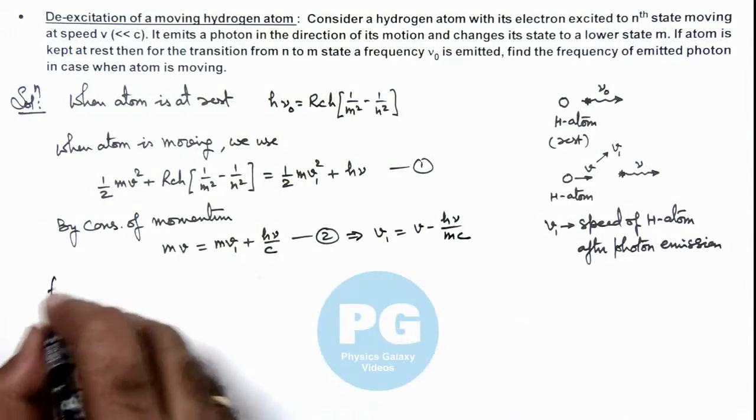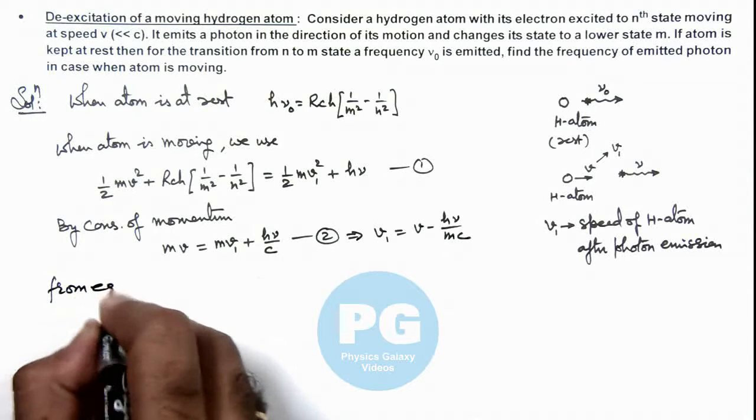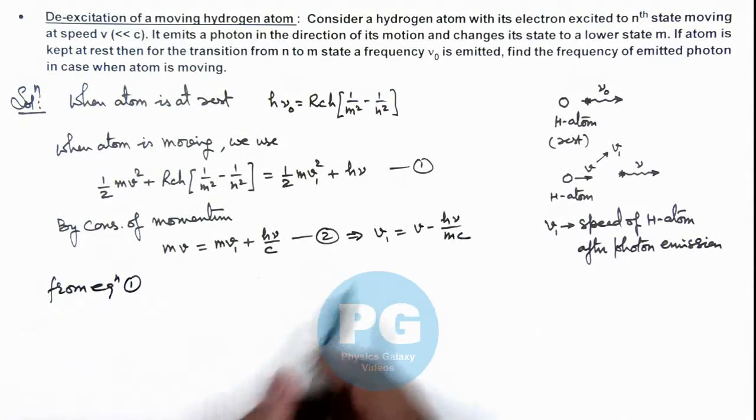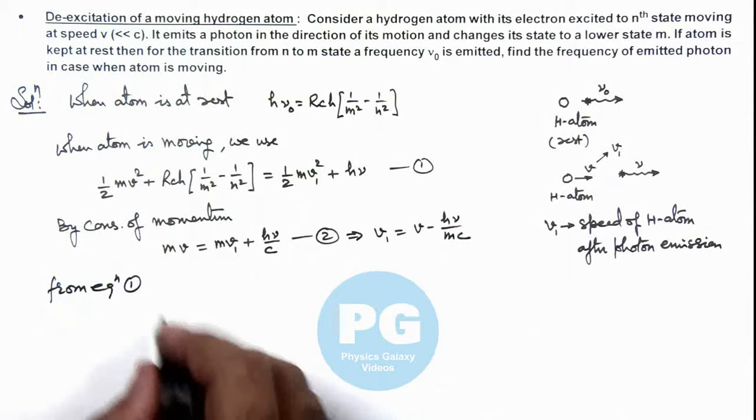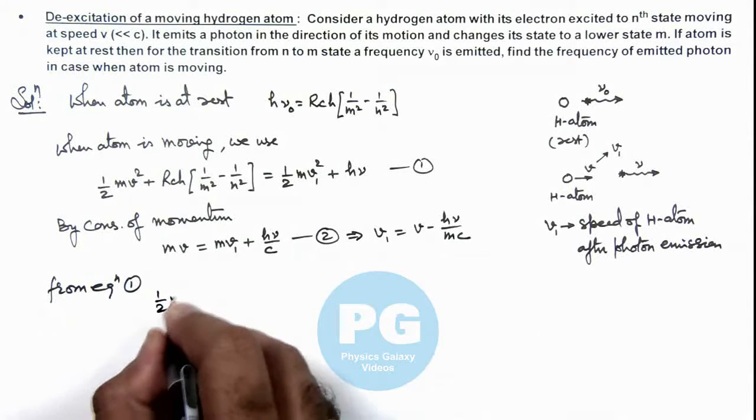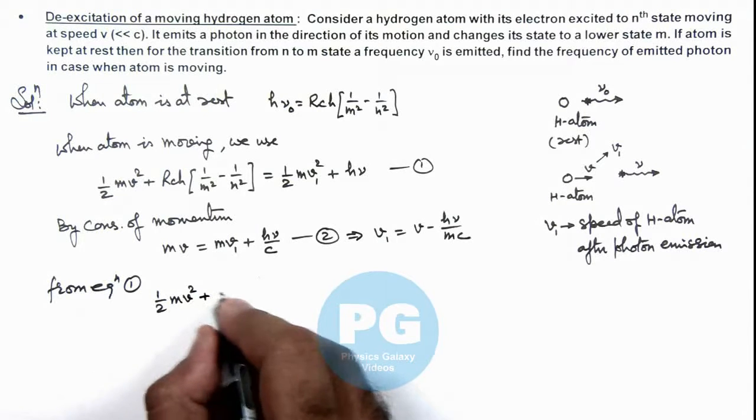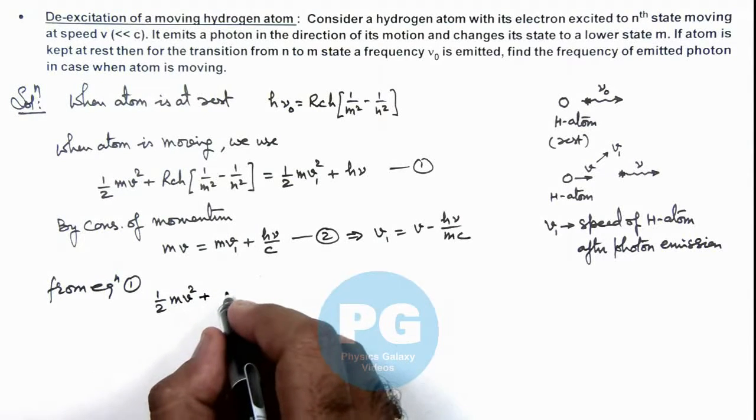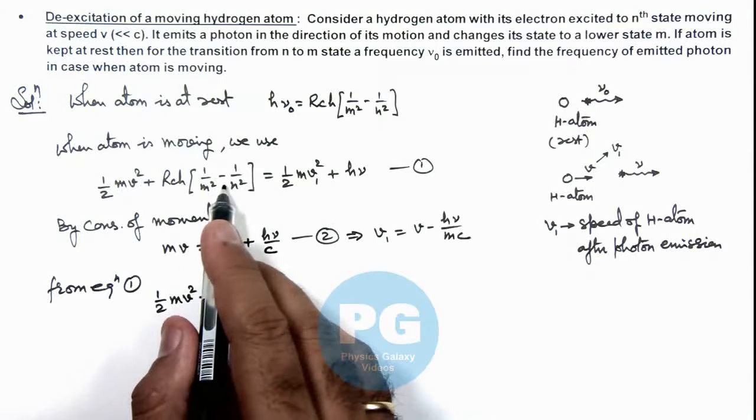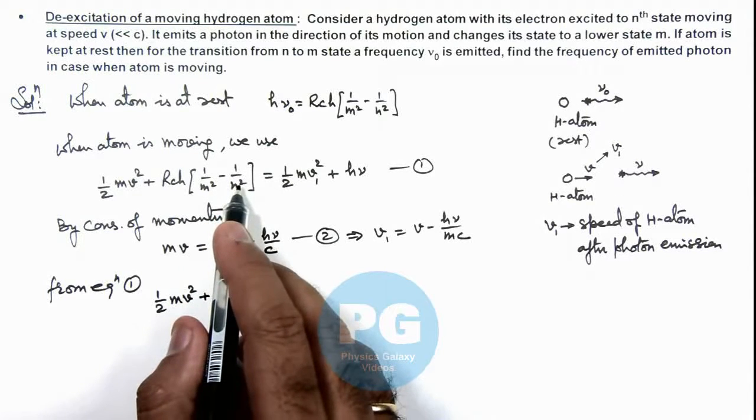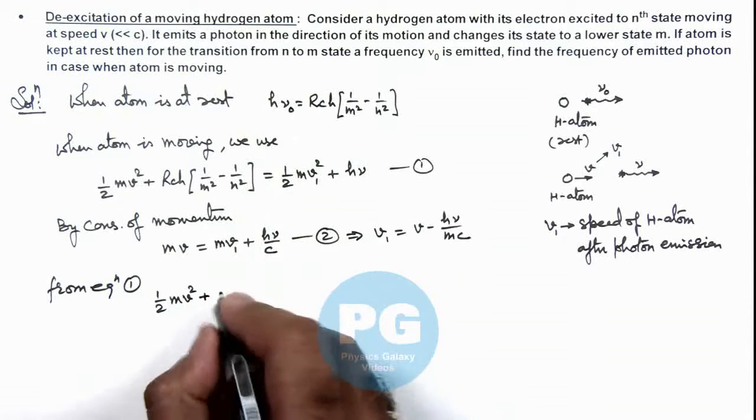Now here from equation 1, if we substitute the value of v_1, see what we will be getting here. It is (1/2)m*v^2 plus Rch, 1 by m^2 minus 1 by n^2, this we can substitute as